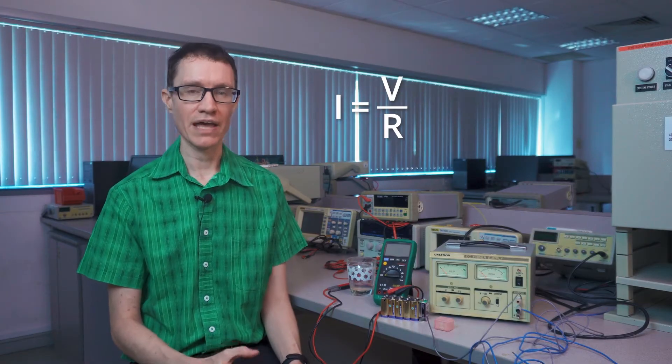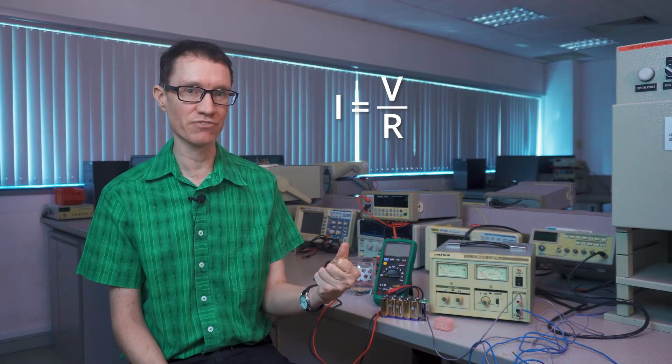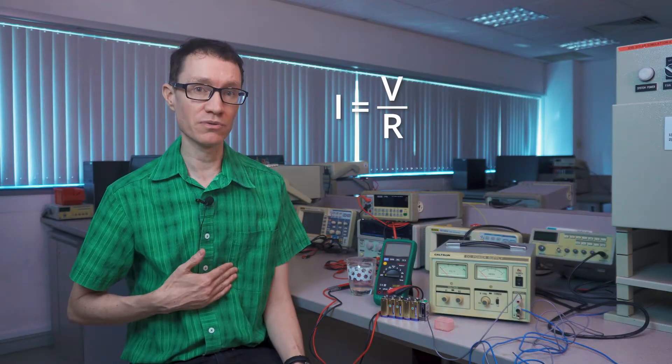At the one milliamp level, you would be able to feel the current. At the 10 milliamp level, your muscles would contract and you might not be able to let go of a conductor if you were getting shocked. At the 50 milliamp level, it's likely that the human heart would fibrillate and that would probably prove fatal.